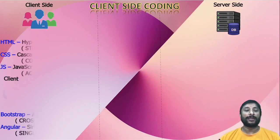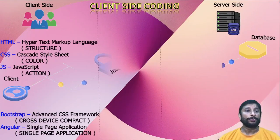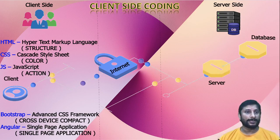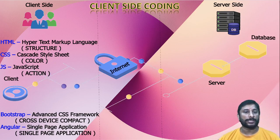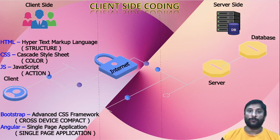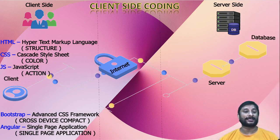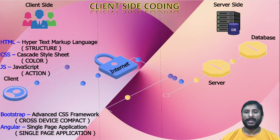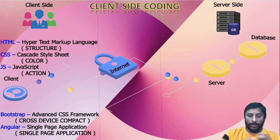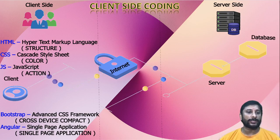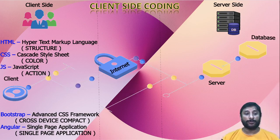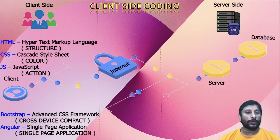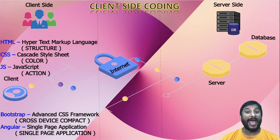For client-side coding, there are specific technologies we must learn. First is HTML — Hypertext Markup Language — to create the structure of your web page. For coloring, we have CSS — Cascading Style Sheets. For actions, JavaScript comes in. To make a mobile-compatible website, you need Bootstrap. And to create a single-page website, Angular comes into the picture.